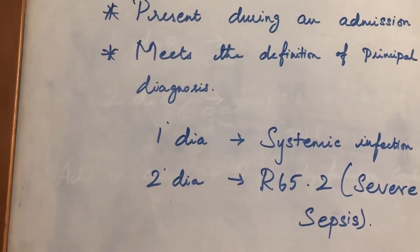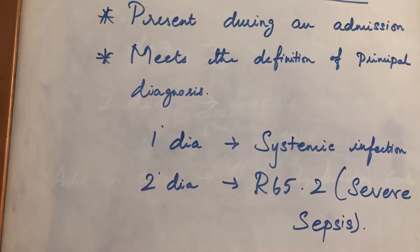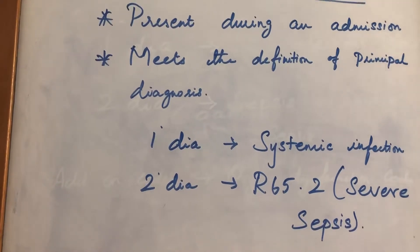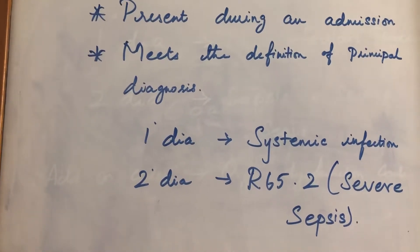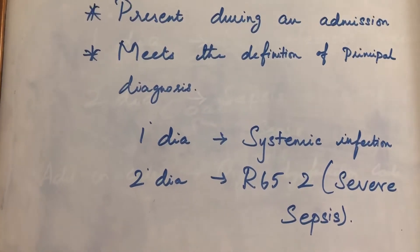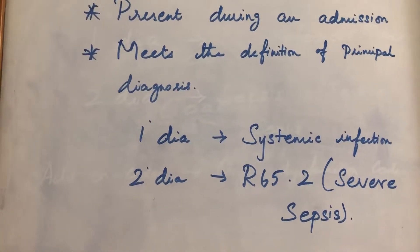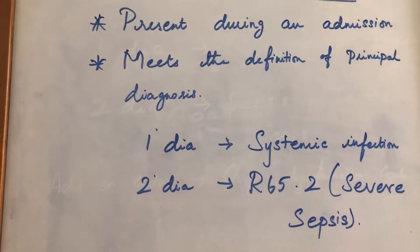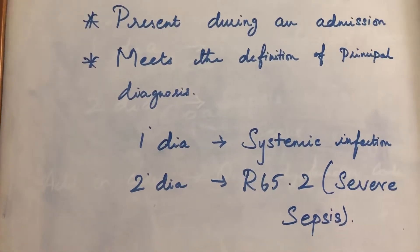This is the coding tip: the Severe Sepsis code is the principal diagnosis code.